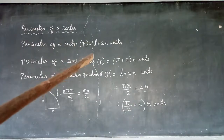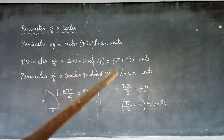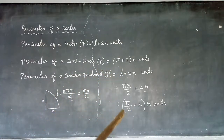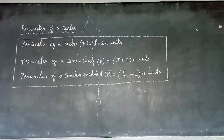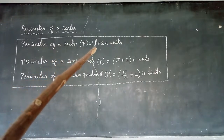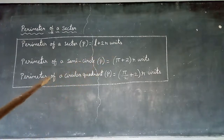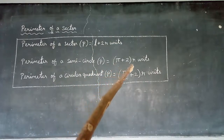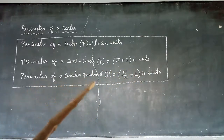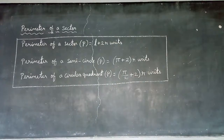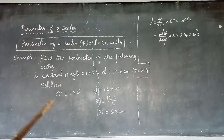In general, the perimeter of a sector is L plus 2R. The semicircle and quadrant have special formulas. Students, write down these formulas: Perimeter of sector P = L + 2R units. Perimeter of semicircle P = (π + 2)R units. Perimeter of circular quadrant P = (π/2 + 2)R units.